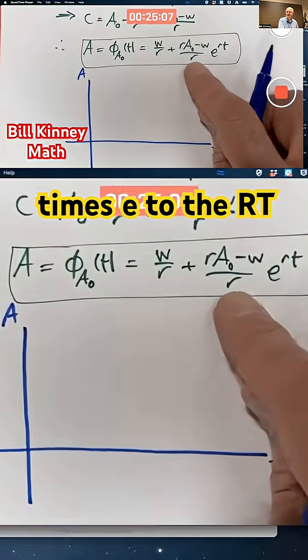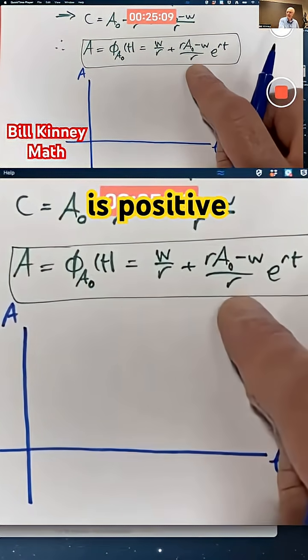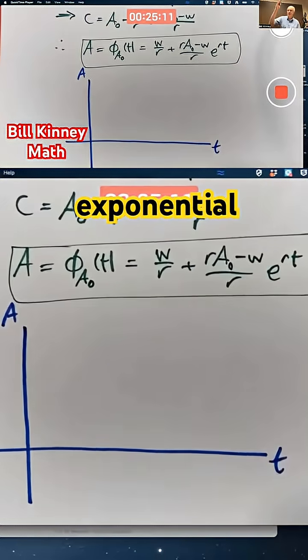A constant plus another constant times e to the rt, if that constant's positive, is going to be truly exponential growth.